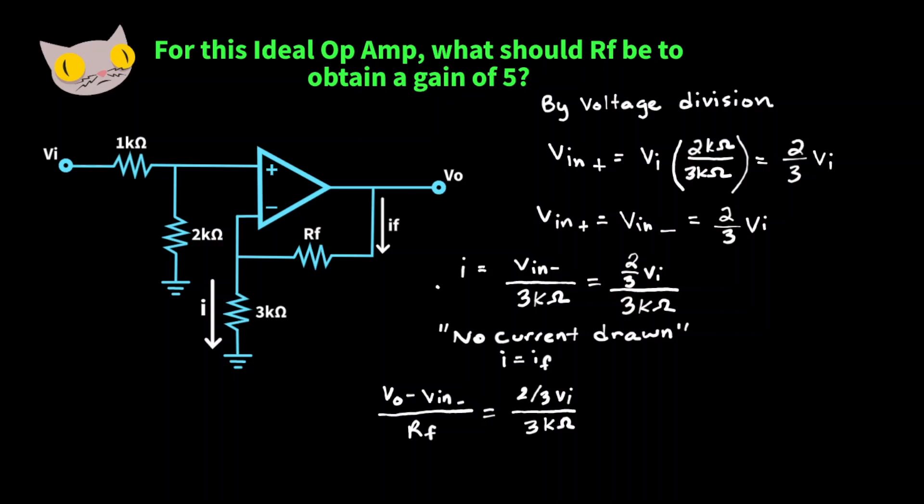But because we're looking for a gain of 5, VO is equal to 5 times VI. So let's replace VO with 5 VI.